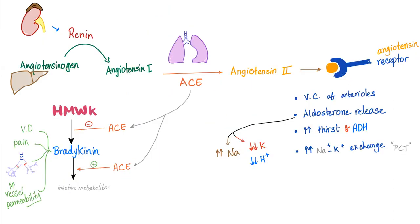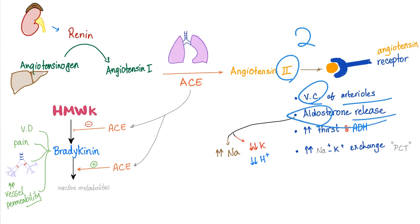Here is the renin-angiotensin-aldosterone system. Renin converts angiotensinogen into angiotensin 1. ACE converts angiotensin 1 into angiotensin 2. Angiotensin 2 attaches to its receptor, having two main functions: vasoconstriction of arterioles and aldosterone release.